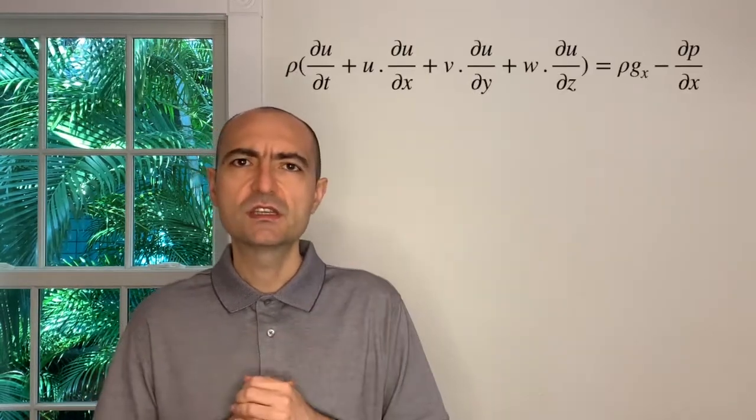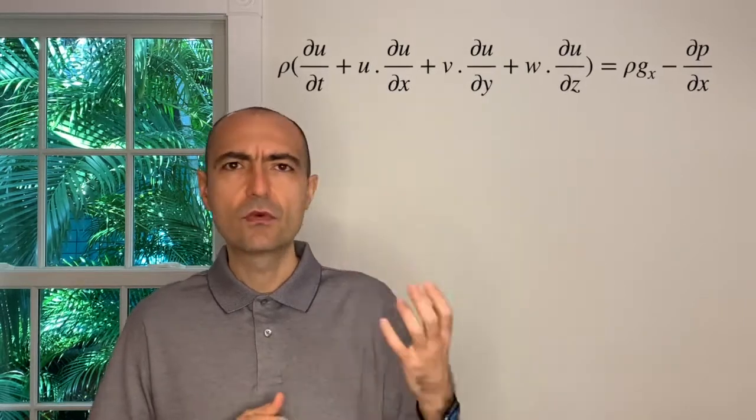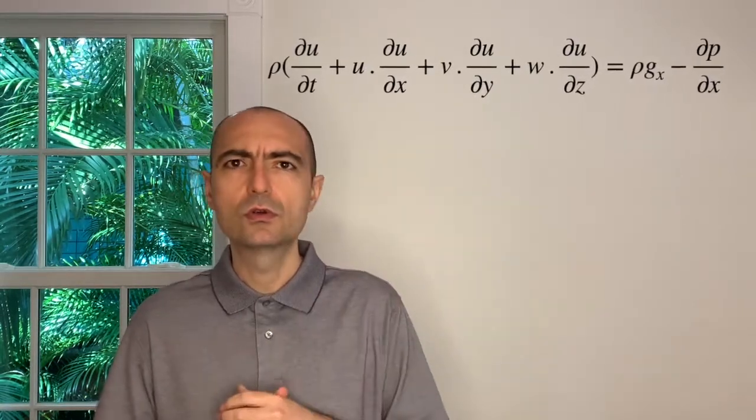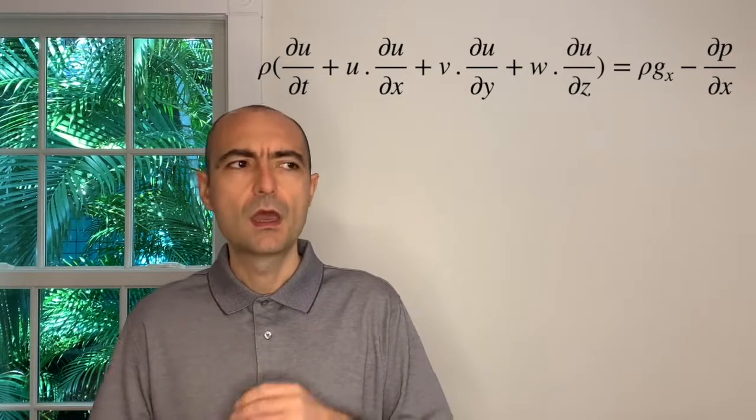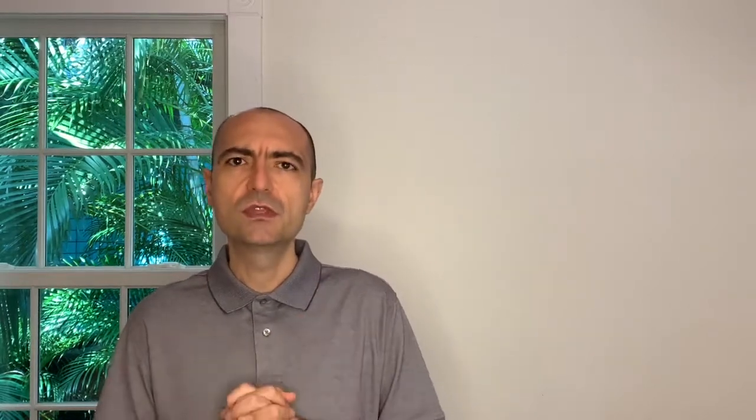Then I made an assumption that is unique to module 9: the flow is inviscid. What happens in an inviscid case is that the shear stresses drop out, and my formulation looked much more manageable. The end result of these three components — using Cartesian coordinates in x, y, and z — I call these Euler's equations of motion.